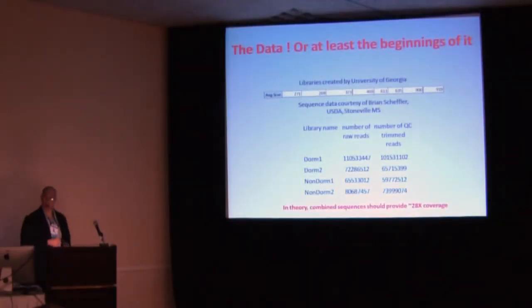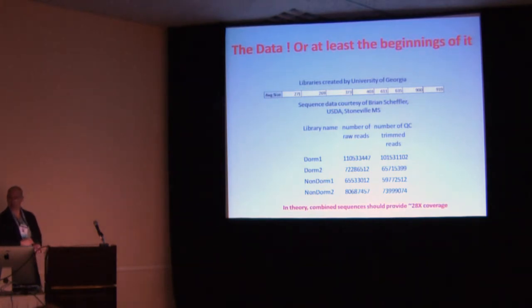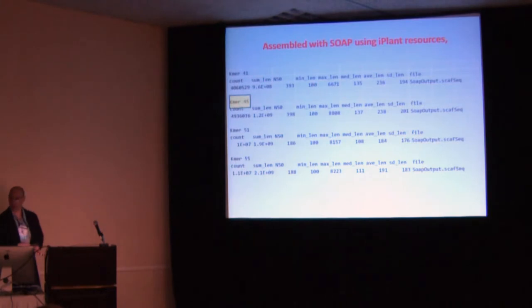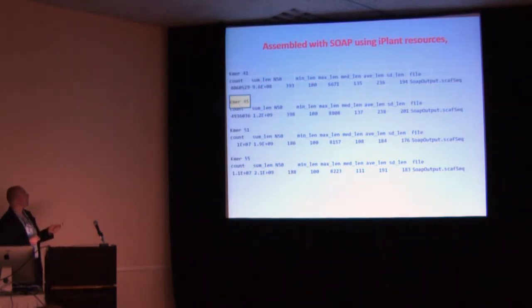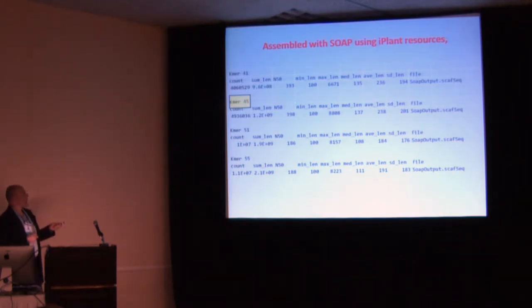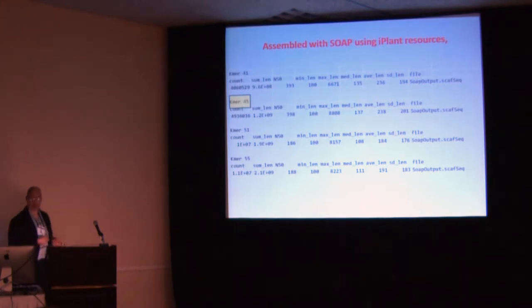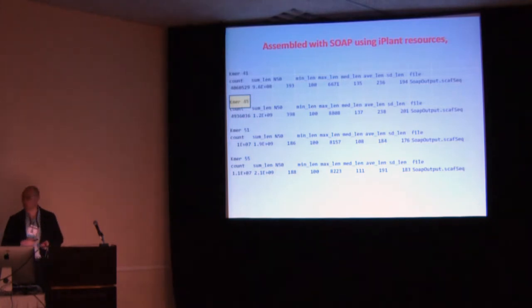I then tried all of the apps for doing assembly, and the one that worked the very first time I tried was Silk DeNovo. I ran it with a number of different K-mers, the best of which turned out to be a K-mer of about 45. And it wasn't great, but I managed to get an N50 of about 390 base pairs, and a maximum length of about 8,000 base pairs.